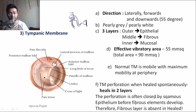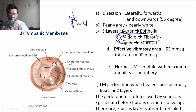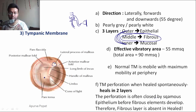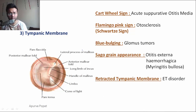A healed perforation closes in two layers because the perforation is often closed by squamous epithelium before the fibrous element develops. The middle fibrous layer develops a little later compared to the epithelium, so the epithelium and mucosal layers combine without the fibrous layer. Therefore, a healed perforation always has only two layers — the fibrous layer is absent.